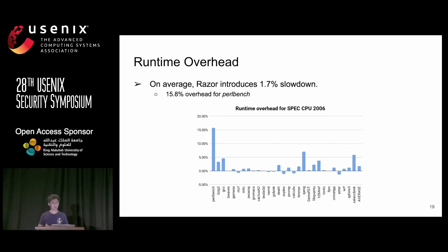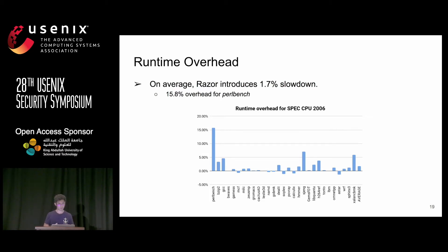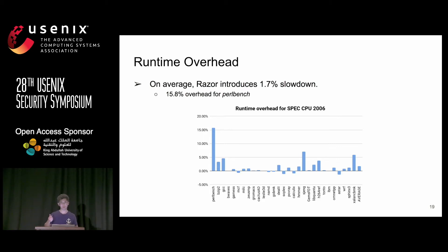For runtime overhead, on average RAZOR introduces 1.7x slowdown. The overhead comes from instrumentation of indirect calls and jumps, because we change them to a series of if-else comparisons and direct jumps. In our extended version, we use a translation table for indirect calls, which can optimize this overhead.